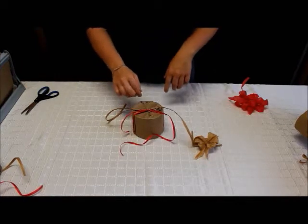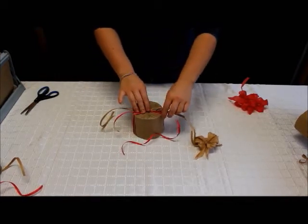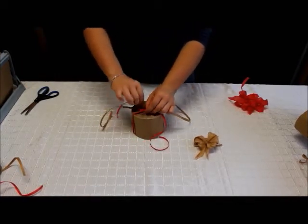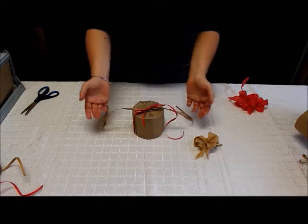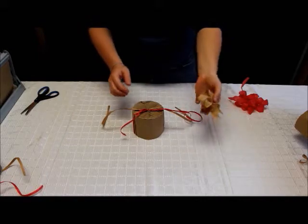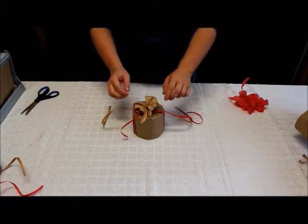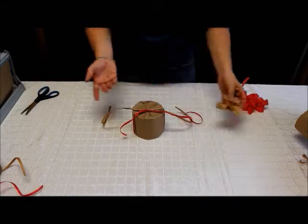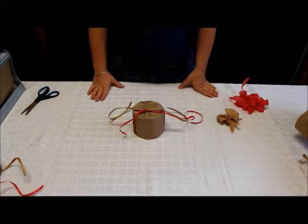Once you've tied the knot securely with the raffia you can either make a bow with the raffia just like we have been doing or you can put on a pre-made bow on the top and attach it like this, whichever the customer likes. And this is how to wrap a cylinder.